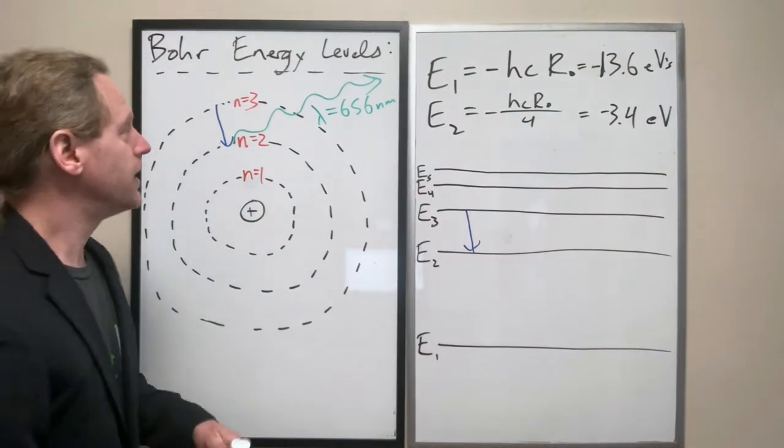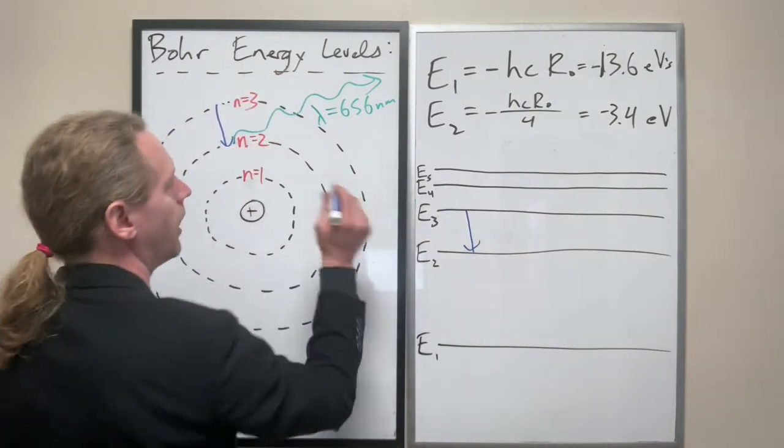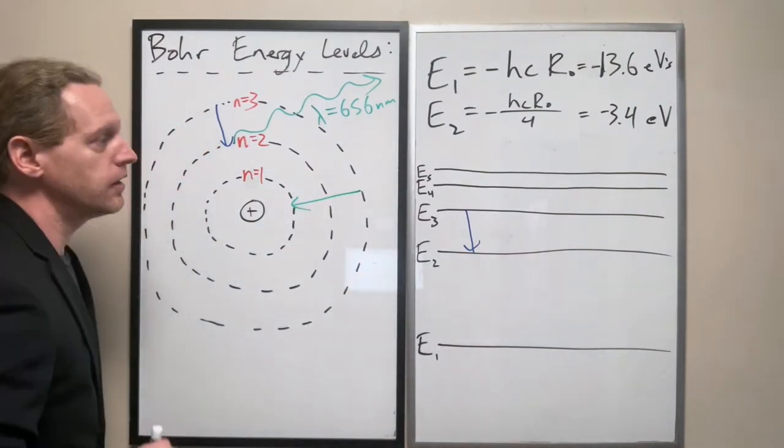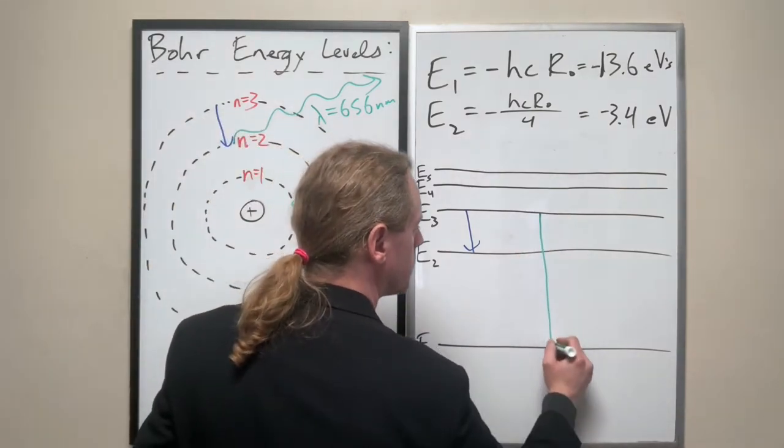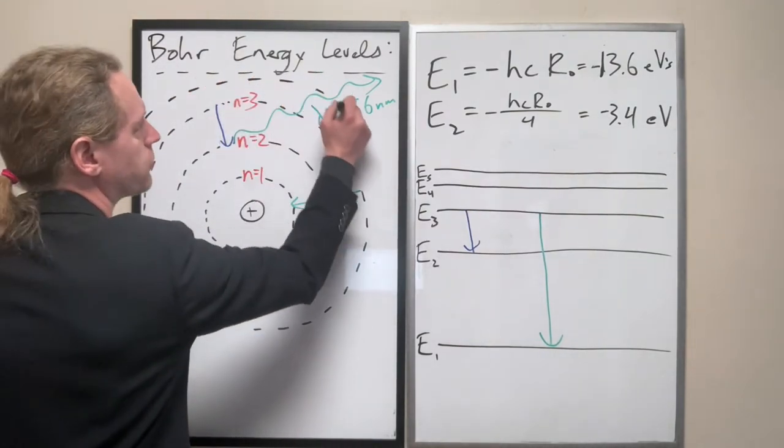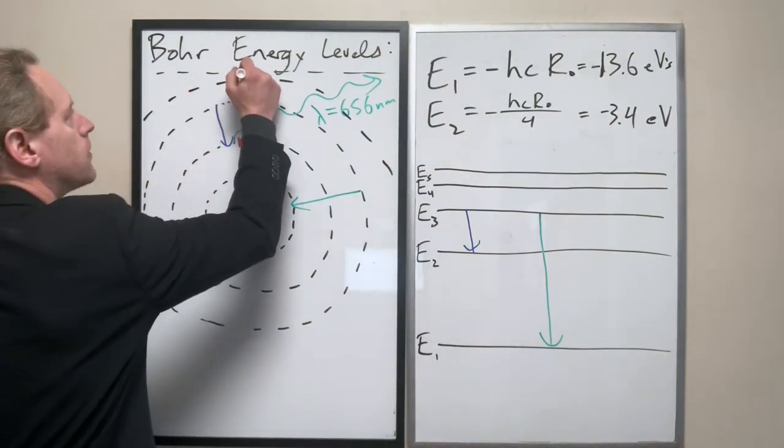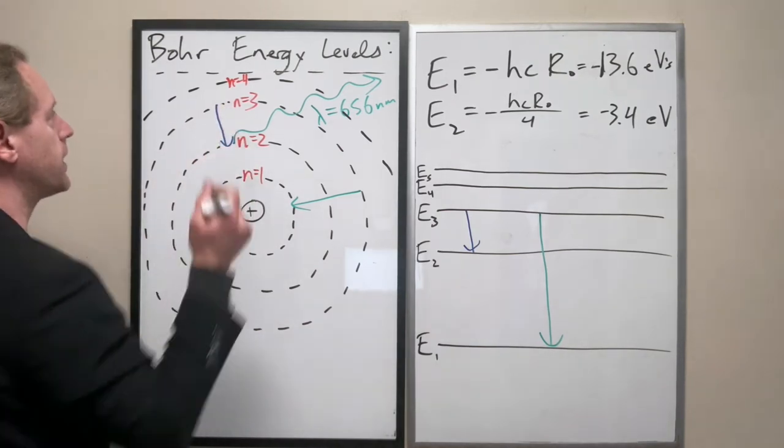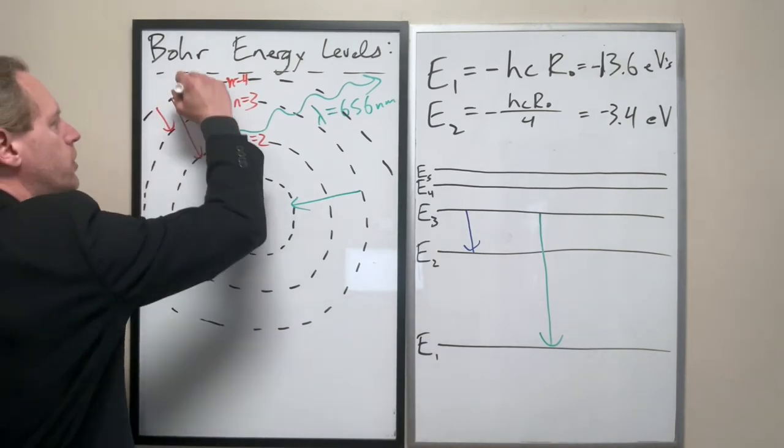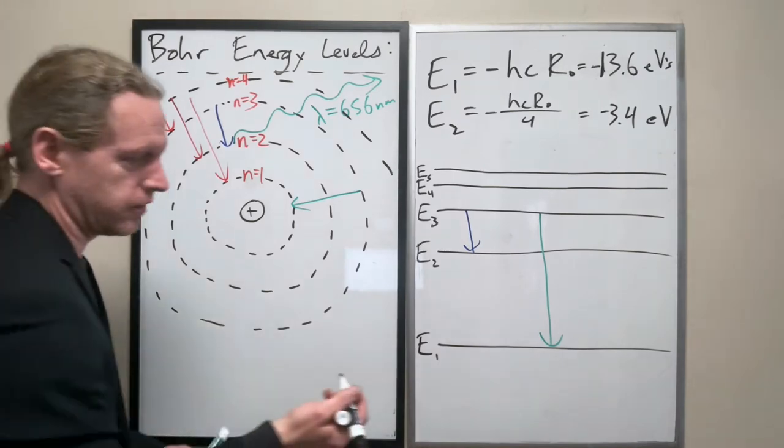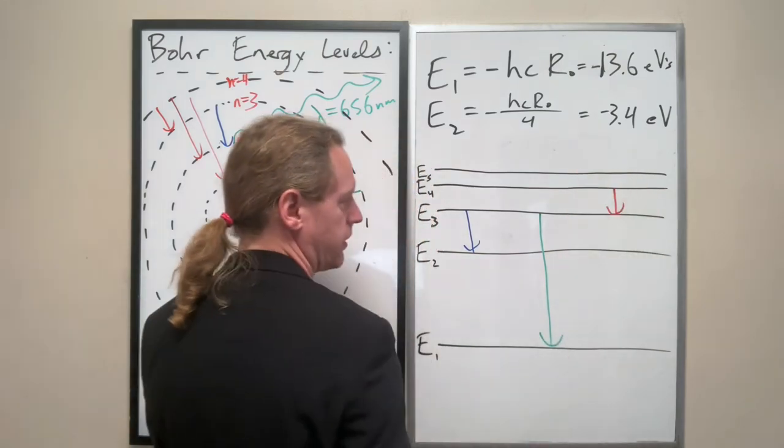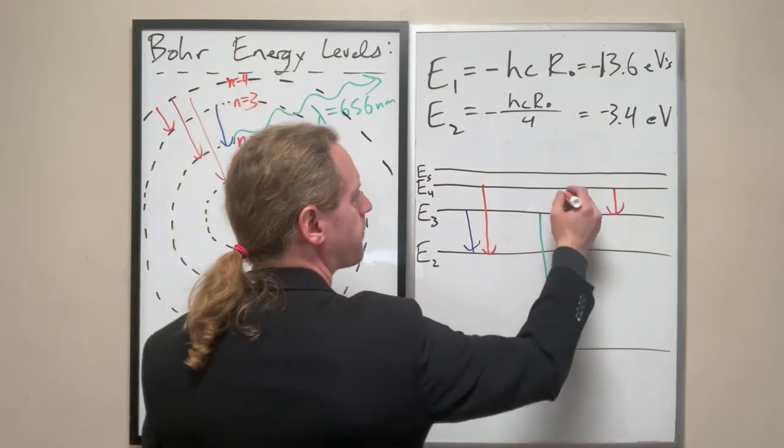But what could also happen is that, I want to use a color-coding here, that electron, if it's in level 3, it could drop down to level 1. So we can draw that here as going from 3 to 1. Now, let's say we have a fourth energy level. If that electron was at n equals 4, which we'll draw here, if that electron's at level 4, it could do the same thing. It could fall down from level 4 to level 3, or it could fall down from 4 to 2, or 4 to 1. So if we're at level 4, we could fall from 4 to 3, we could fall from 4 to 2, we could fall from 4 to 1.